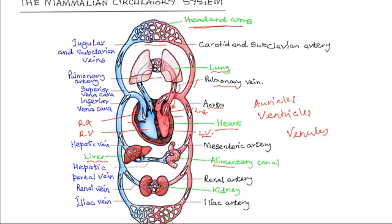So each major organ and region has an artery, like for example the kidney, has renal artery that brings blood to the organ and renal vein that carries blood away from it.